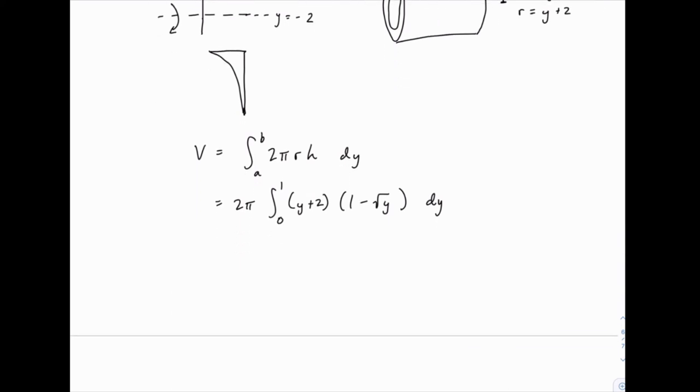Now to carry out this integral, you can expand out this binomial. So you have y plus 2 times 1 minus the square root of y. So that would be y plus 2, minus y times the square root of y, minus 2 times the square root of y. And then the easiest thing is to rewrite those all as powers of y. So y plus 2, minus y to the 3 halves, minus 2y to the 1 half. And then you can integrate.